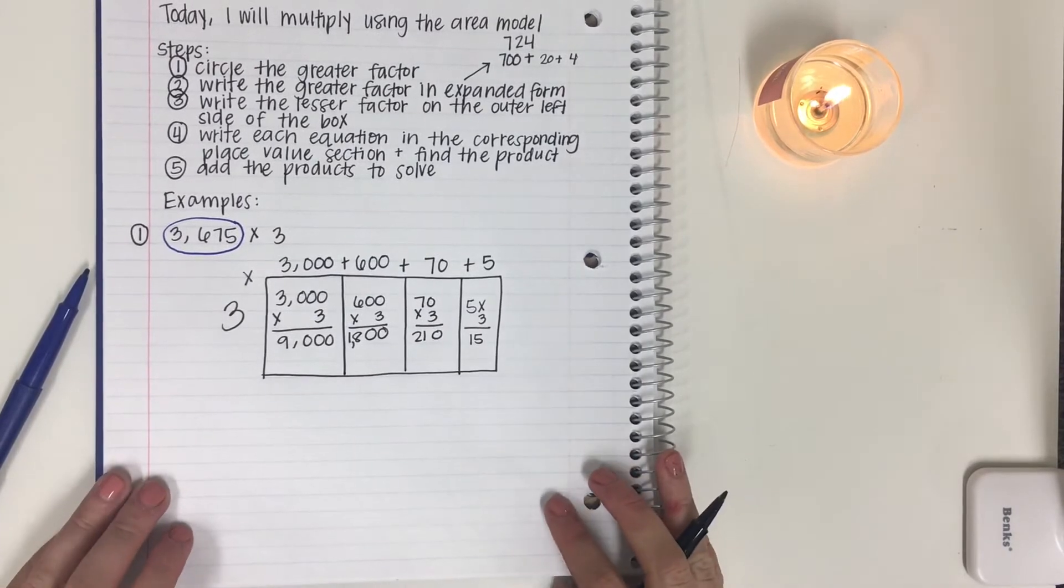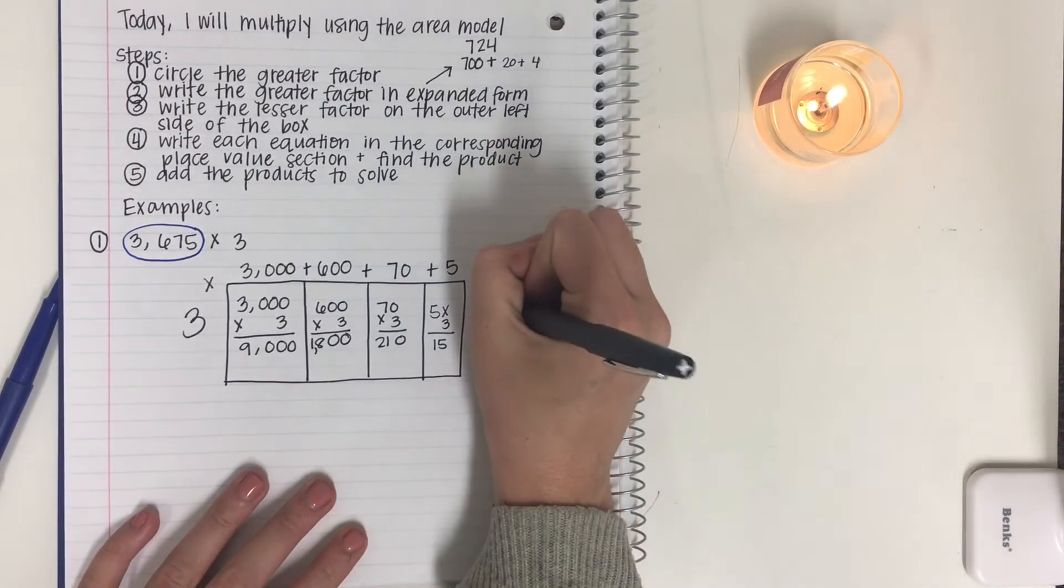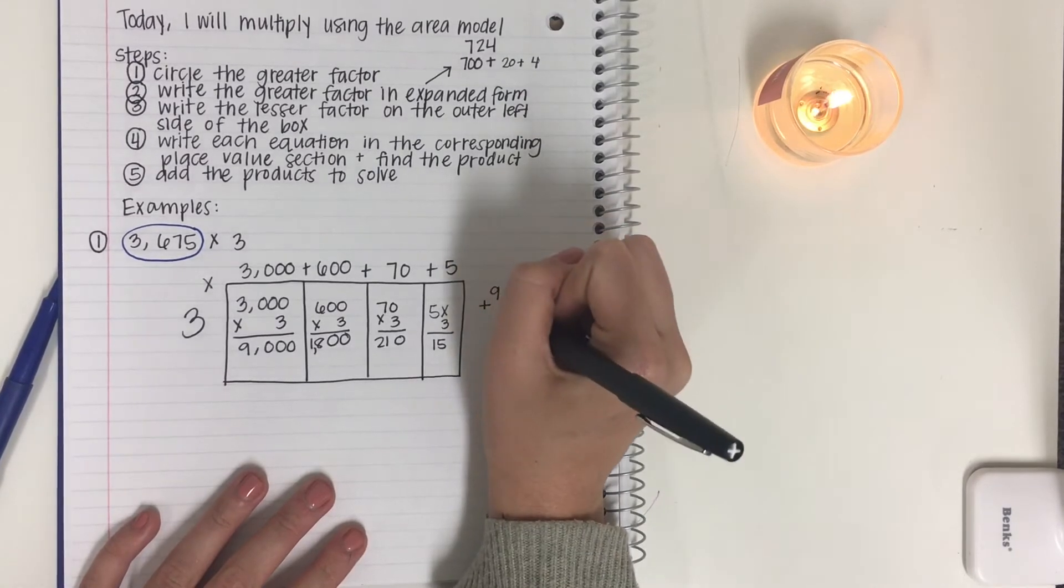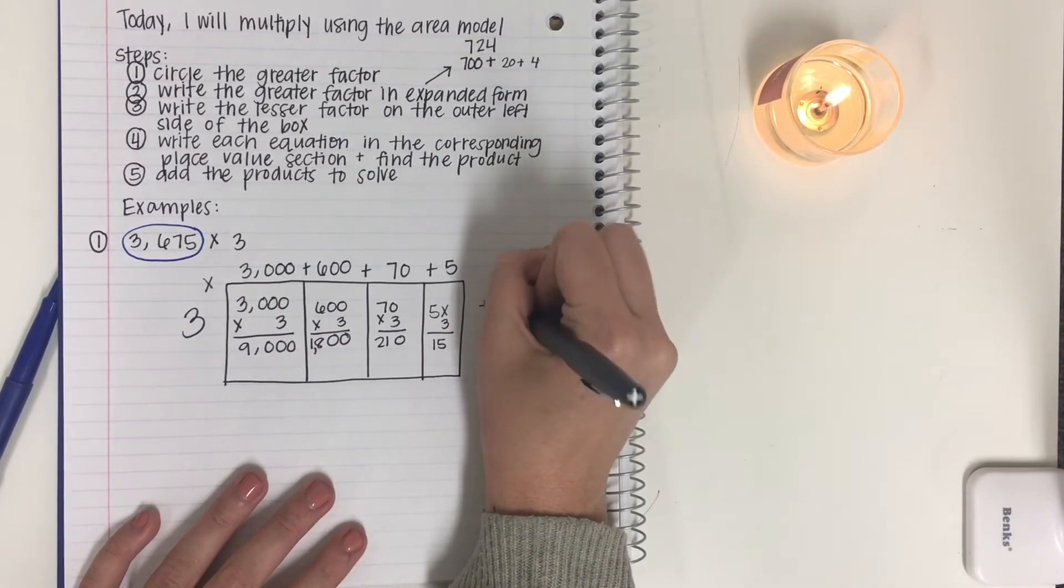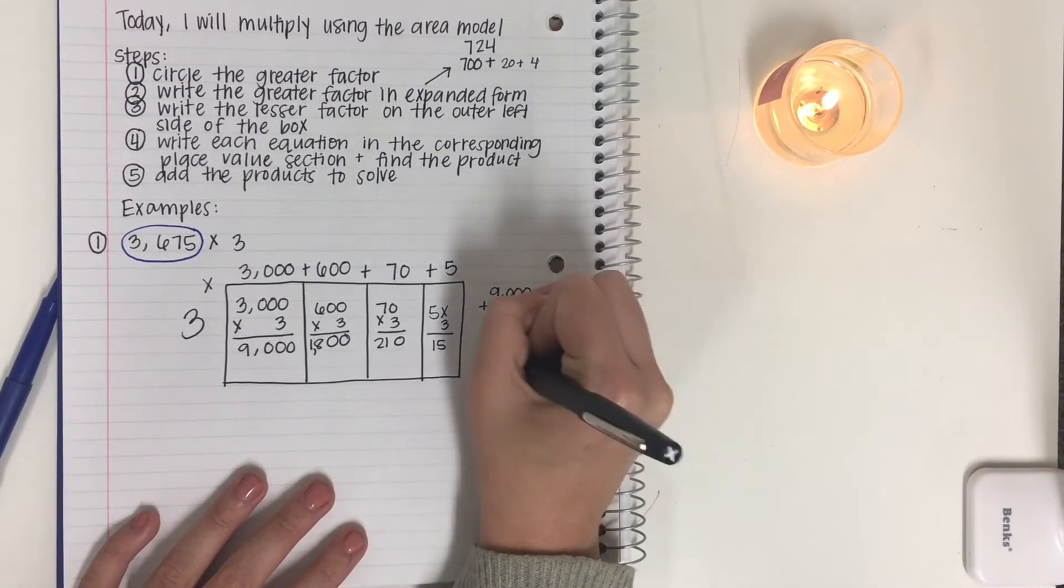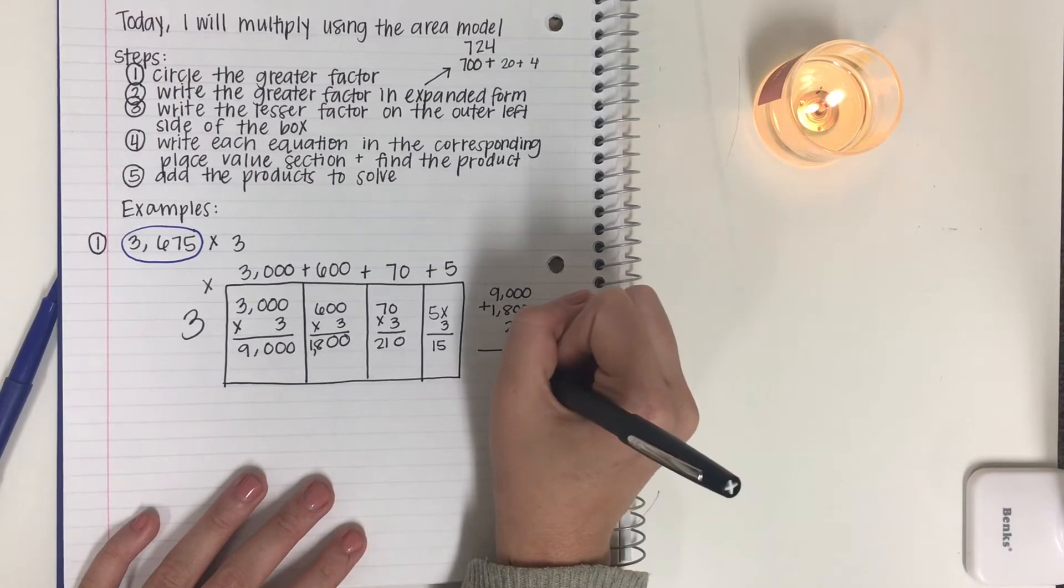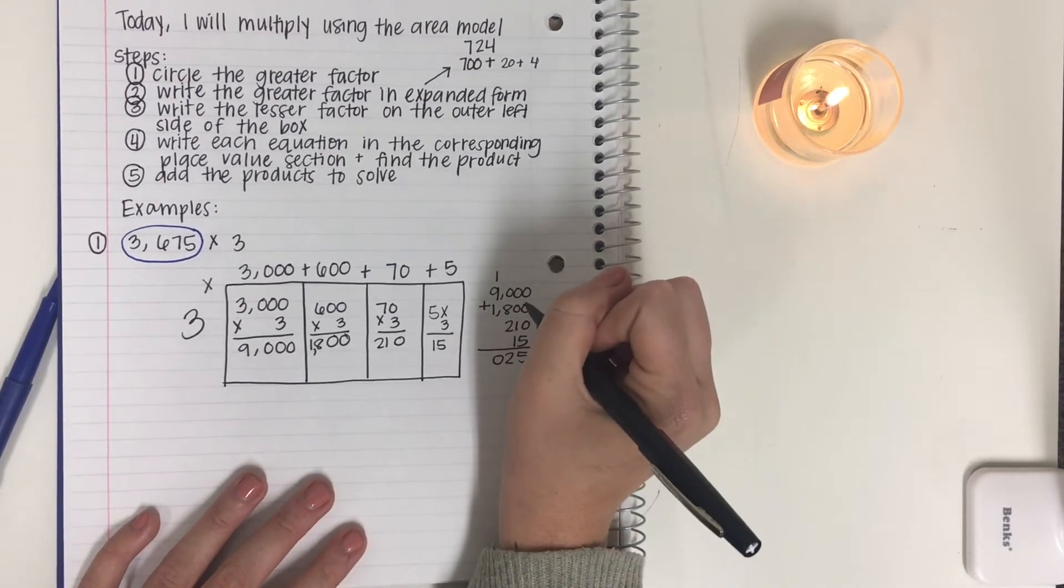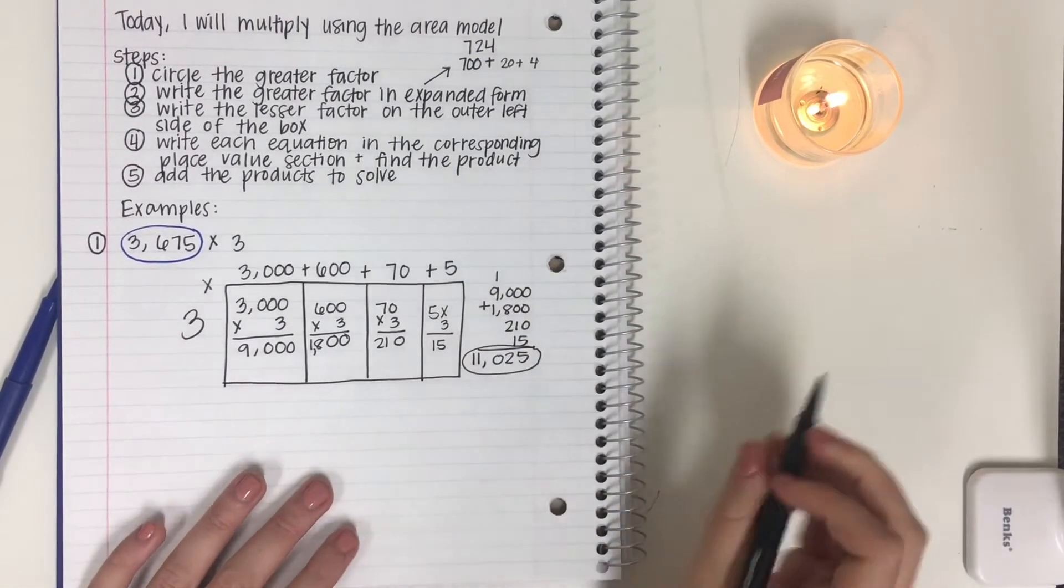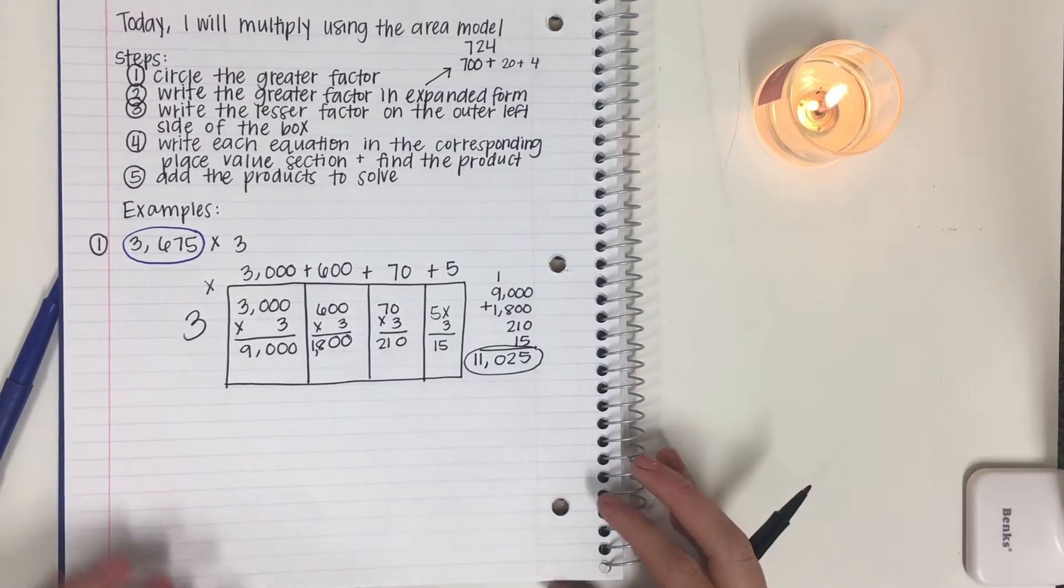Now we need to add the products to solve. So off to the side or underneath, wherever you want to do it, we're going to add them up to find our answer. So we're going to do 9,000 plus 1,800 plus 210 plus 15. Bring the zeros down. We have 5, 2, 10, 9, 10, 11. 11,025 is our final answer. Using the area model, we can multiply that way. Let's do another example together.